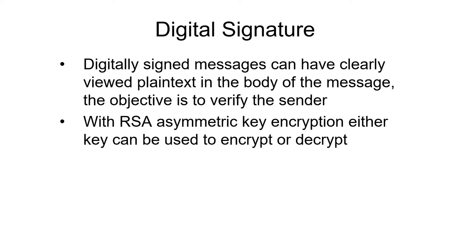Digital signatures are a way of signing a document or plain text — be it text, file, or anything — so that you can verify who created it. The RSA asymmetric or public key encryption can be used to encrypt or decrypt. With RSA, you have a public key and a private key. Either key can be used to encrypt and you just use the other key to decrypt.